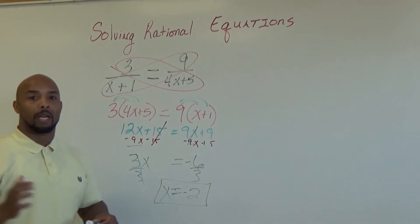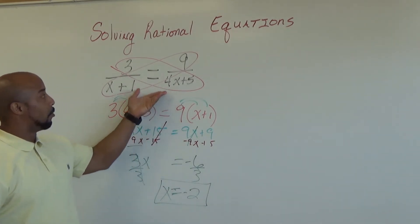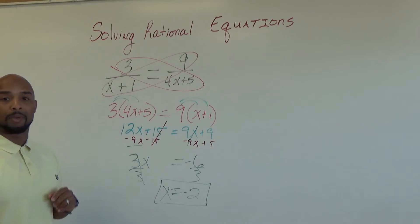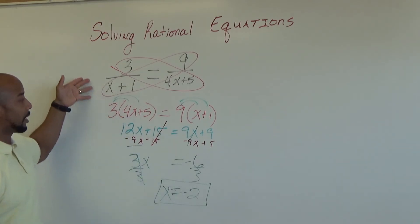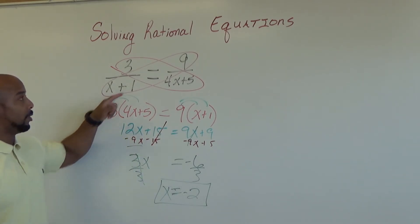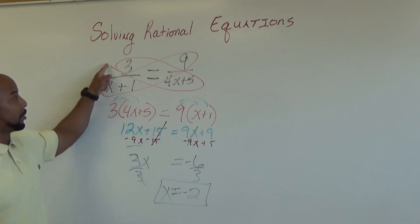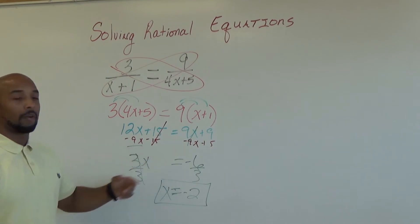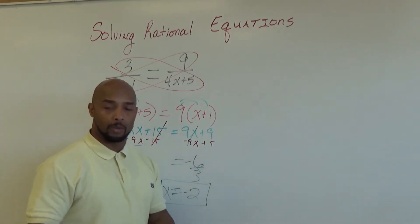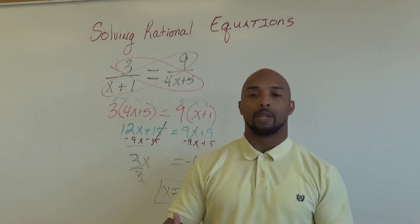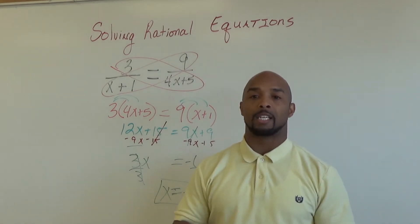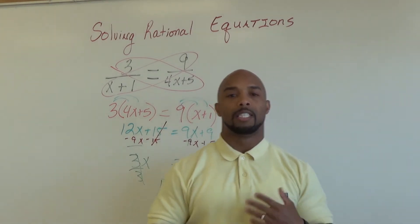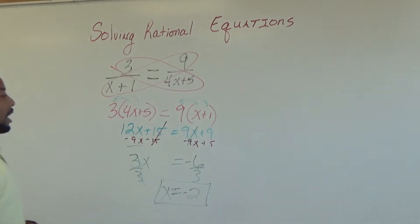Here we have our first rational equation. Notice it is set up as a proportion so we use the cross multiplication method. Keep in mind you have a monomial times a binomial in both cases, so we must distribute, and after distributing we just solve it as we would any linear equation. If you understand this, pause the video and jot this information down. If you have any burning questions, feel free to bring them to your instructor for further understanding.